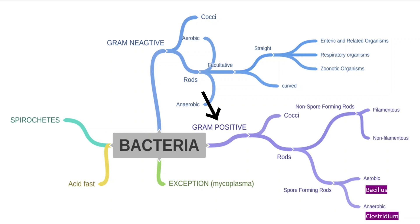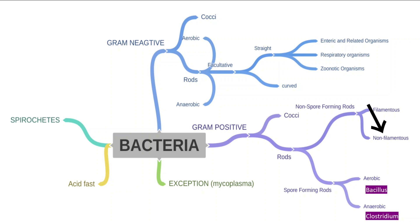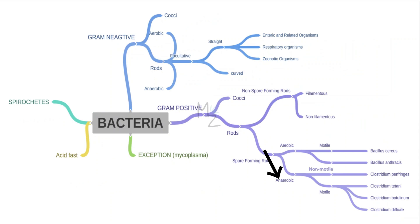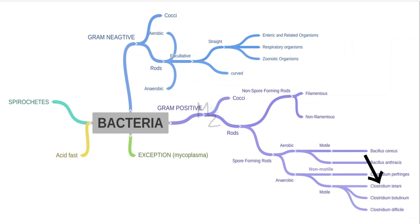Gram-positive bacteria are further classified into cocci and rods. Rods are classified into spore-forming and non-spore-forming. Non-spore-forming rods are subdivided into filamentous and non-filamentous. Spore-forming rods are classified into aerobic — for example, Bacillus — and anaerobic — for example, Clostridium. Both are further divided into motile and non-motile. The aerobic motile is Bacillus cereus and aerobic non-motile is Bacillus anthracis. The anaerobic non-motile is Clostridium perfringens, while the anaerobic motile rods include Clostridium tetani, Clostridium botulinum, and Clostridium difficile.